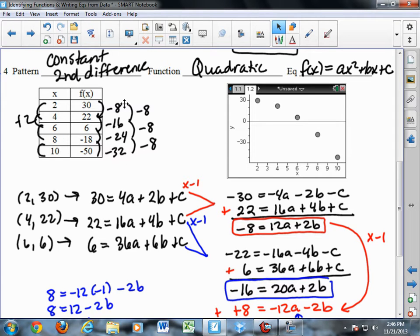Those numbers have a pattern. From negative 8 to negative 16 is negative 8, and then from negative 16 to negative 24 is negative 8, and from negative 24 to negative 32 is negative 8. These numbers are all the same. This is known as a constant second difference. Basically, we're applying the linear pattern twice to the y values. When we do that, it's always quadratic.